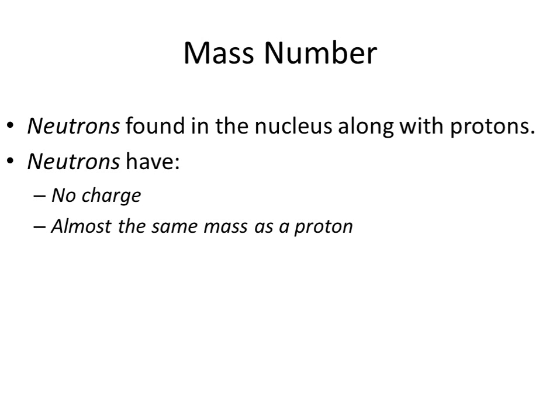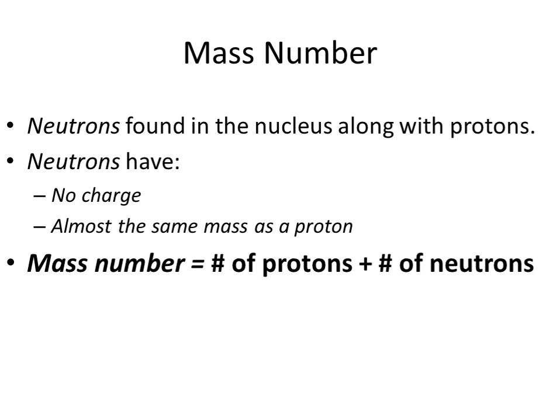And so, the neutrons having no charge, but almost the same mass as a proton, if we take the number of protons plus the number of neutrons, we come up with this mass number. And the mass number will be a whole number, since we are taking whole number increments of protons and neutrons here.